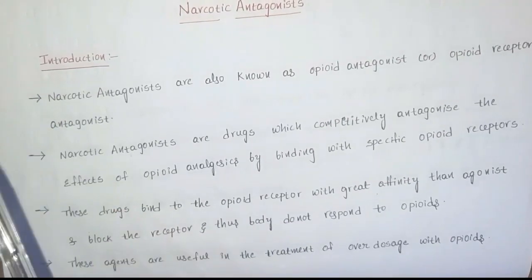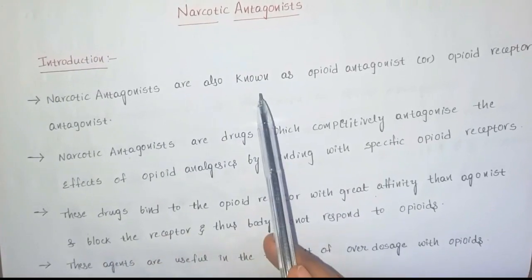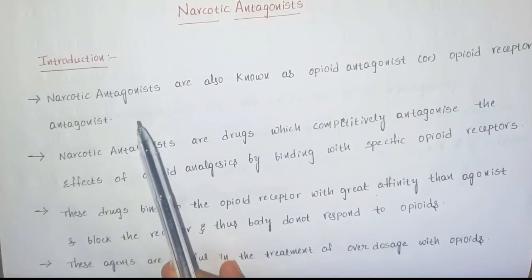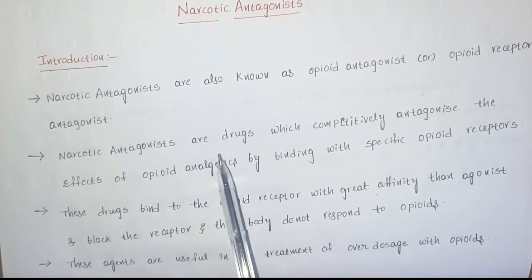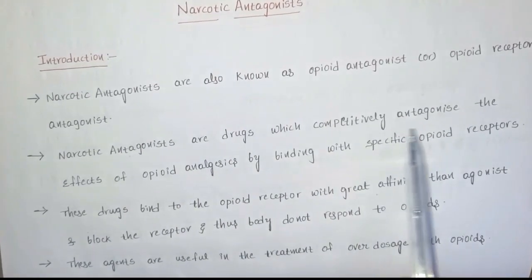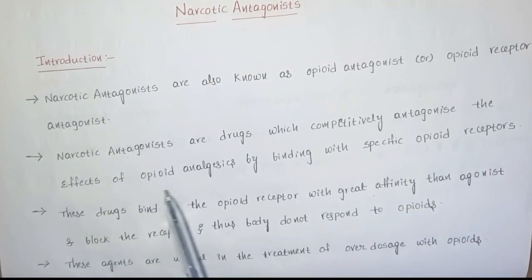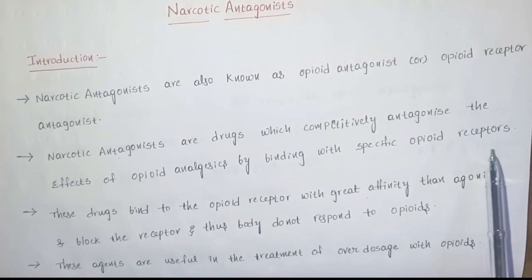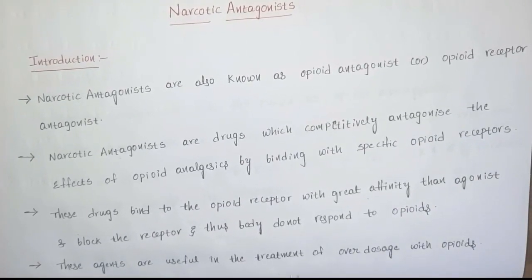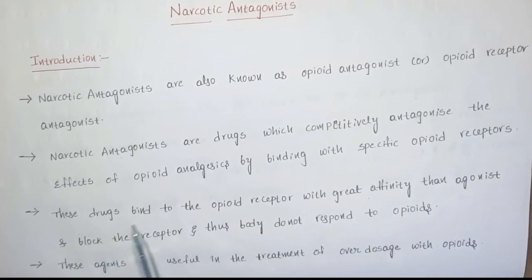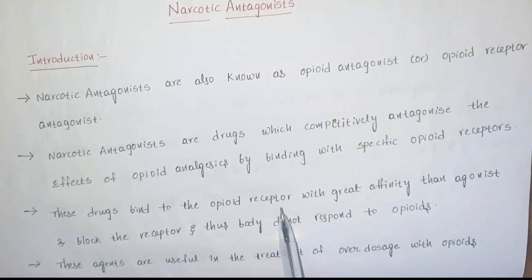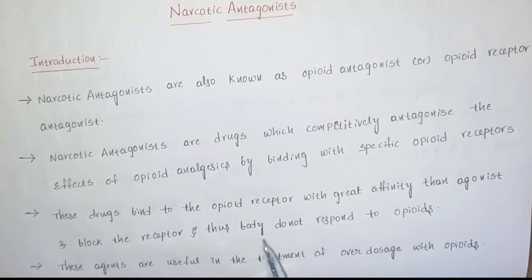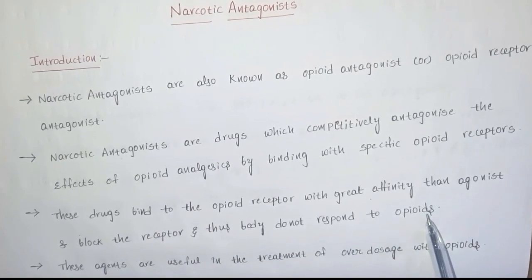Coming to the introduction, narcotic antagonists are also known as opioid antagonists or opioid receptor antagonists. Narcotic antagonists are drugs which competitively antagonize the effects of opioid analgesics by binding with specific opioid receptors — that is mu, kappa, and delta receptors. These drugs bind to the opioid receptor with greater affinity than agonists and block the receptor, and thus the body does not respond to opioids.